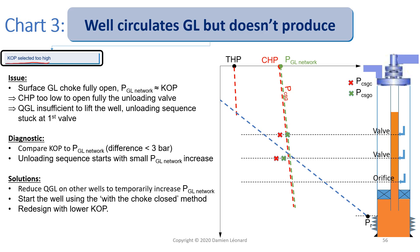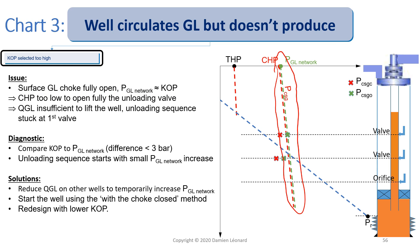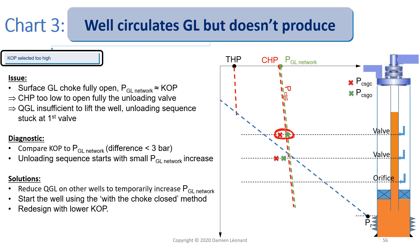The next issue from chart 3: the kickoff pressure has been selected too high. In that case, your surface gas lift choke will be fully open and your kickoff pressure is going to be almost equal to the gas lift network pressure. As we can see, the casing head pressure is almost equal to the kickoff pressure and to the gas lift network pressure. Therefore, the casing head pressure is too low to fully open the unloading valve. Because you don't have enough casing pressure at the depth of this first valve, the throttling effect means the dart in your valve is too close to the orifice — the valve is not fully open, and not open enough to allow a good amount of gas lift to circulate across it. This restricts the gas lift rates, which are insufficient to lift the well, and the unloading sequence is stuck at the first valve.